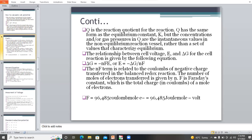Q are instantaneous values in the non-equilibrium reaction rather than a set of values that characterize equilibrium. The relationship between the cell voltage E and the change in Gibbs free energy for the cell reaction is given by the following equations. Change in Gibbs free energy equals -nFE or E equals minus change in Gibbs free energy divided by nF. The n term is related to coulombs of negative charge transferred in the balanced redox reaction. F is the Faraday's constant which is the total charge in coulombs per mole of electrons.